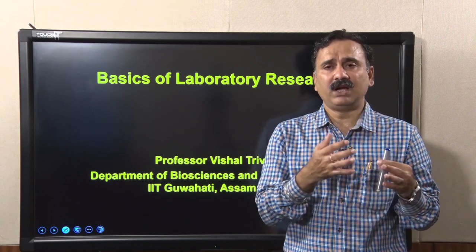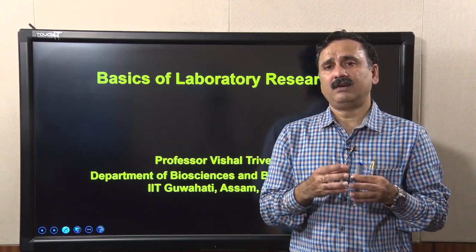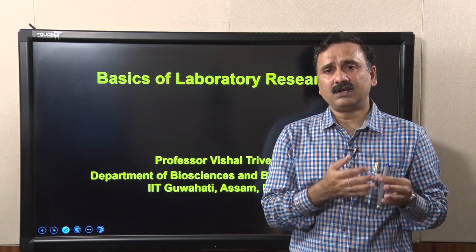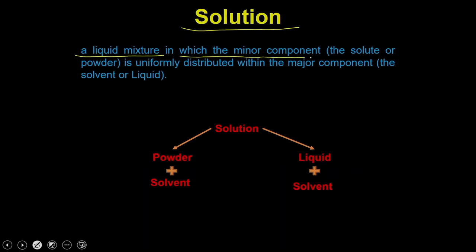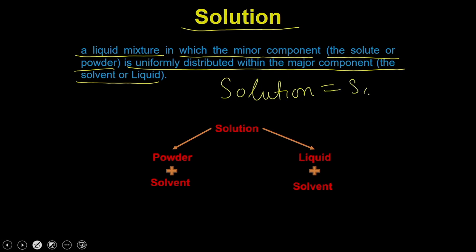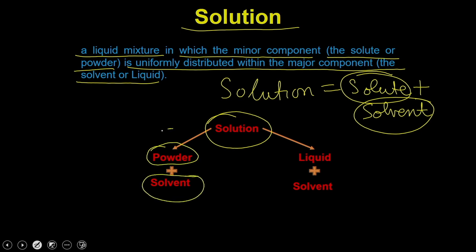We will start the lecture with understanding how to prepare different types of solutions, the precautions to take while preparing them, and the different ways to prepare them. A solution is a liquid mixture in which the minor component — the solute or powder — is uniformly distributed within the major component, the solvent or liquid. A solution is a combination of solute plus solvent. You can prepare a solution by taking a powder solute and dissolving it into a solvent.